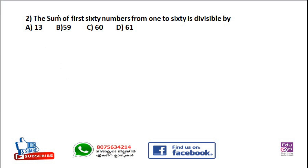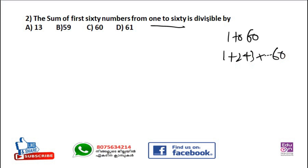The sum of the first 60 numbers from 1 to 60 — what is it divisible by? The sum of the first 60 numbers from 1 to 60 is the answer. You can see that the first one is the bigger answer. Let's try this: 70 is the first of 60 times 60 divided by 2. One is right.